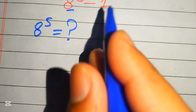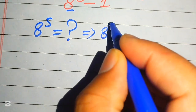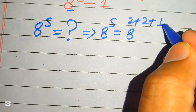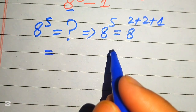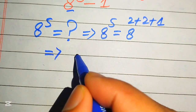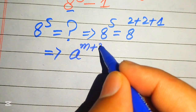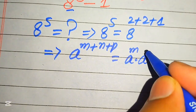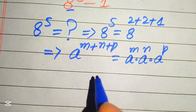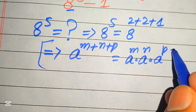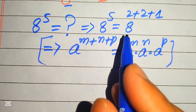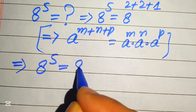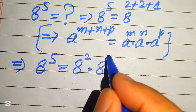To find the value of 8 to the power of 5, we write the exponent 5 as 2 plus 2 plus 1. We apply the exponent law: a to the power of m plus n plus p equals a^m multiplied by a^n multiplied by a^p. So 8^5 equals 8 squared times 8 squared times 8.